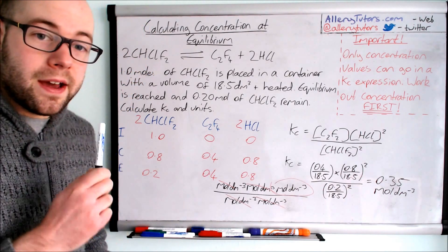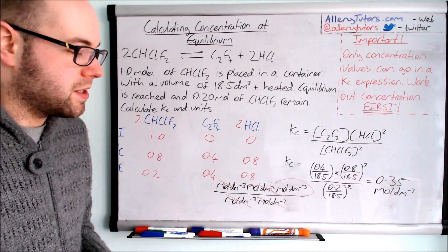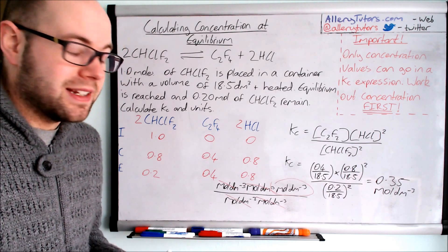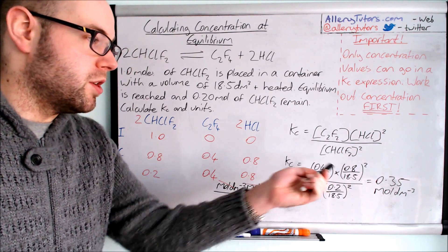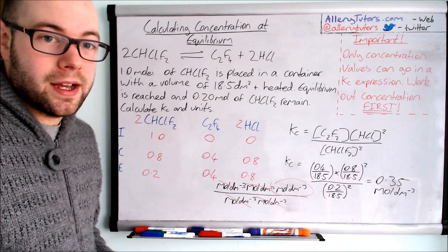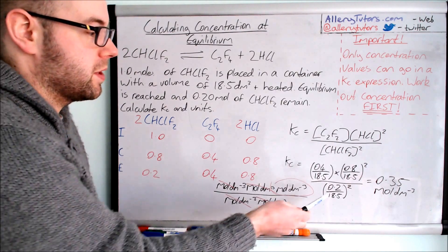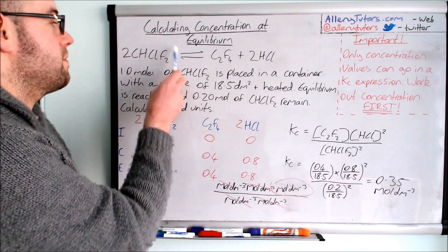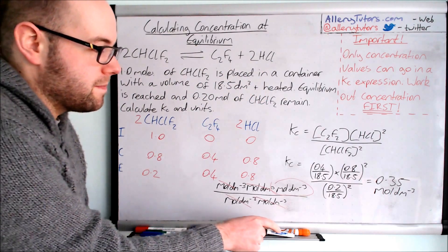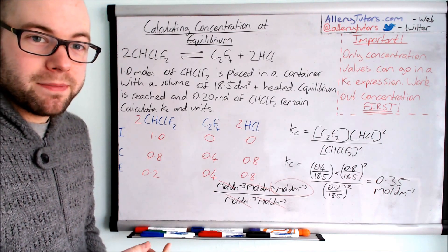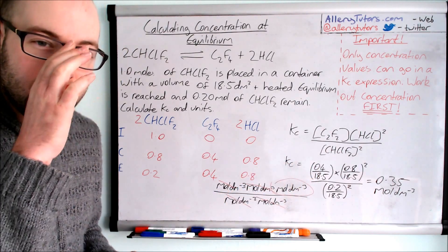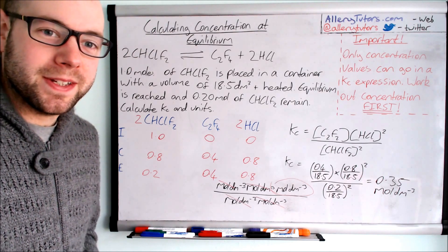So our answer is Kc = 0.35 mol dm⁻³. A value less than one tells us that the equilibrium lies slightly to the left — there is more reactant than product at equilibrium. Remember units can change depending on your Kc expression, so always work them out carefully. That's a more difficult example, but not too bad once you get your head around it — make sure you calculate this properly as it's the biggest sticking point.